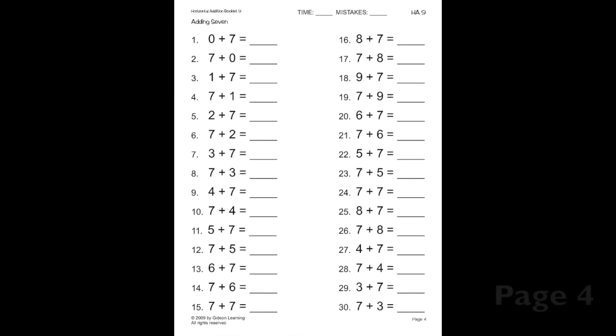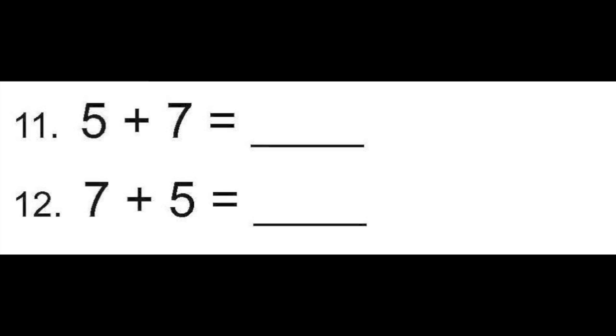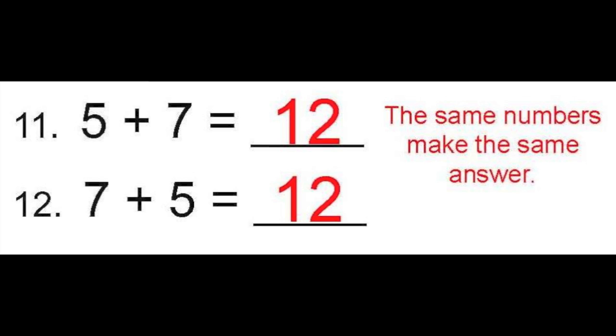On this drill page, we're going to focus on number 11 and number 12. Here we have 5 plus 7, which equals 12. Next is 7 plus 5, which also equals 12. With these two problems, you'll notice that the same numbers make the same answers. If you change the order of the numbers you are adding, the sum or the answer stays the same. So when you're having trouble with a problem, add the smaller number to the bigger number.